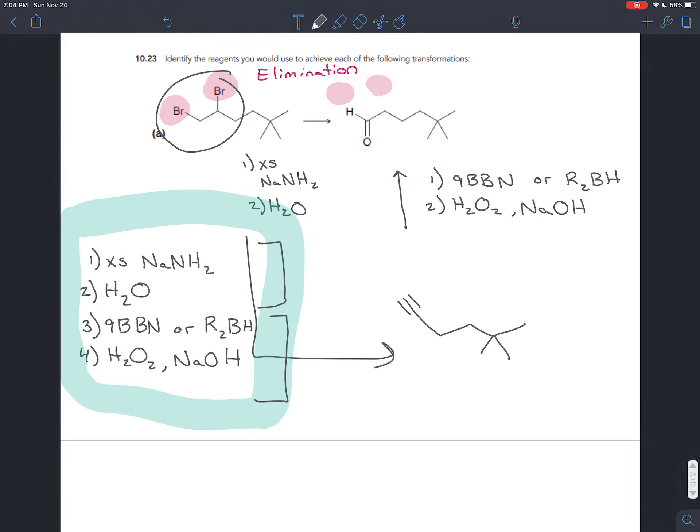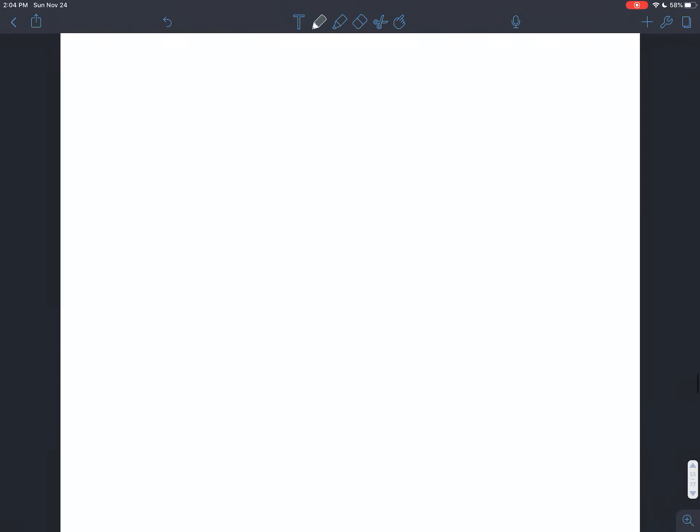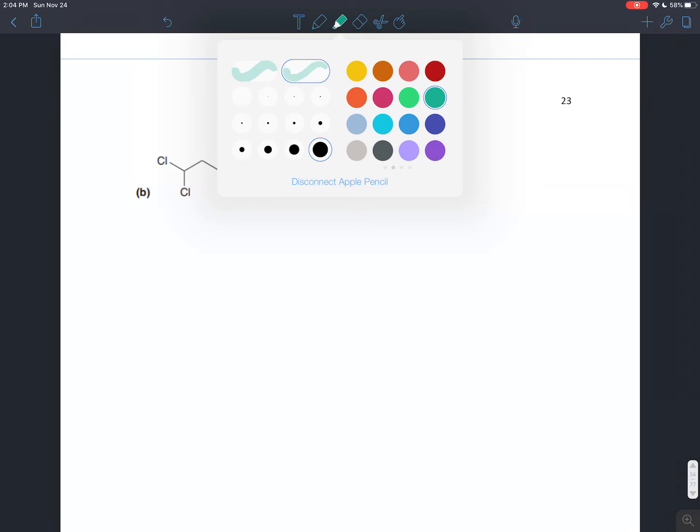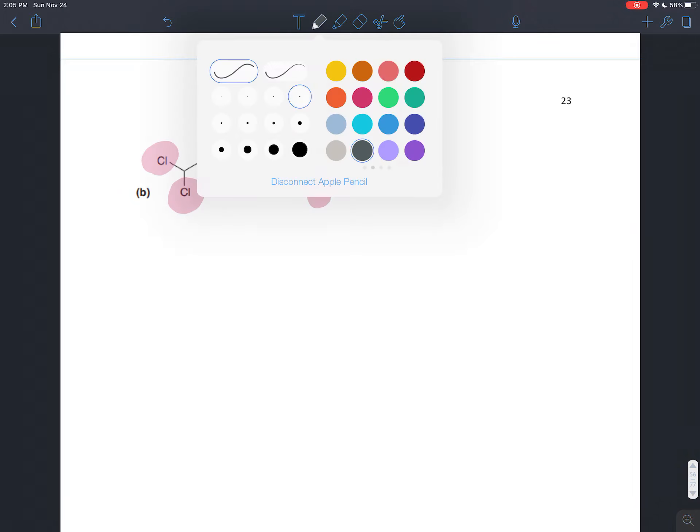You see bromines and know you can do elimination. You see an aldehyde or ketone and know you can make it from an alkyne. That's part A. Part B is similar. We have two chlorines on our starting molecule that aren't in the product, so we have to do elimination with both.